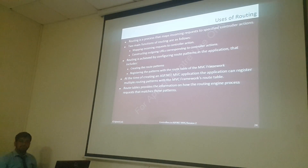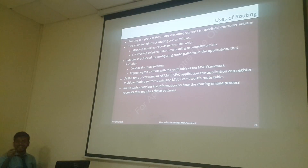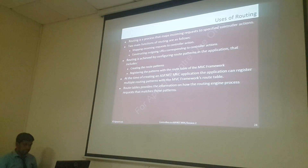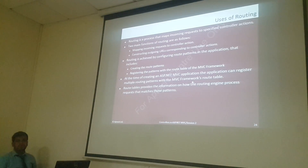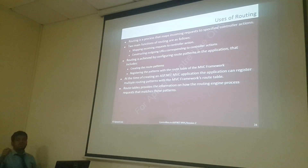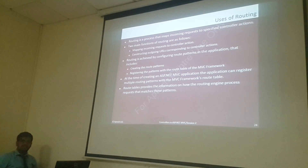So routing — how you can achieve it: routing is achieved by configuring the route patterns in the application, which includes creating the route patterns and registering the patterns with the route table. So that is why the URL — you are calling a method — there are actually two options: the URL option and the configuration option. That's why it's done by routing. At the time of the application, the application can register multiple routing patterns.